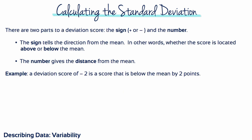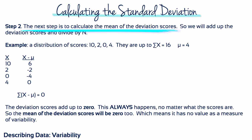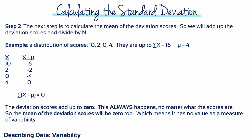There are two parts to a deviation score: the sign and the number. The sign tells the direction from the mean — whether the score is located above or below the mean. The number gives the distance from the mean. So a deviation score of minus 2 is a score that is below the mean by two points. The next step is to calculate the mean of the deviation scores — adding up the deviation scores and dividing by n. For example, if we have scores of 10, 2, 0, and 4, their deviation scores will be 6, minus 2, minus 4, and 0. These deviation scores add up to 0 — this always happens, no matter what the scores are. So the mean of the deviation scores will be 0, which means it has no value as a measure of variability.